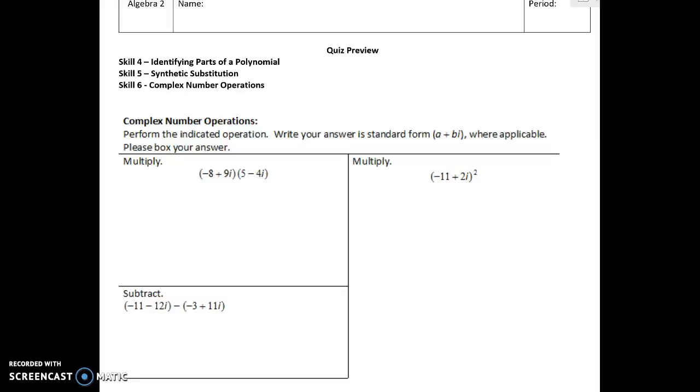All right guys, so here we're going to do skill six on complex number operations. I want you to know the different operations you can perform with complex numbers. The biggest thing you have to know is that i squared is negative one. That's a key feature I would put on a note card because we're going to be using that definition a lot.